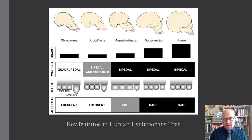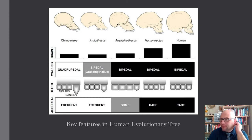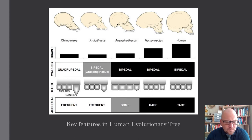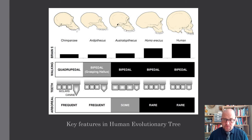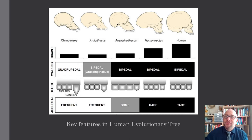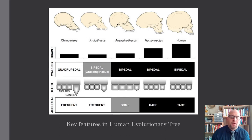Chimps were arboreal, Ardipithecus probably was too, and the Australopithecines may have split their time. But once you get to our genus, it's pretty rare to find tree-dwelling Homos. What caused this change? One important thing to understand is the environmental change happening at the time we branched off from chimpanzees. There was a lot of climate change going on — the world was becoming cooler and drier. That loss of moisture led to desertification, and areas that had previously been forest were slowly turning into savannas and grasslands.